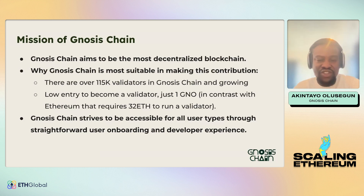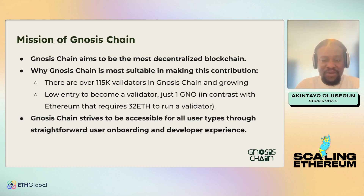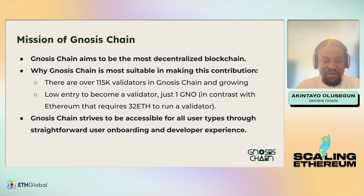To achieve compatibility with Ethereum's 32 ETH validator requirement, one GNO is converted to something called mGNO, and one GNO equals 32 mGNO. mGNO is what is used for validation, making it compatible with Ethereum. Gnosis Chain also strives to be accessible for all user types through straightforward onboarding and developer experience. Converting your GNO to mGNO can be done with just a few clicks — no advanced knowledge required.